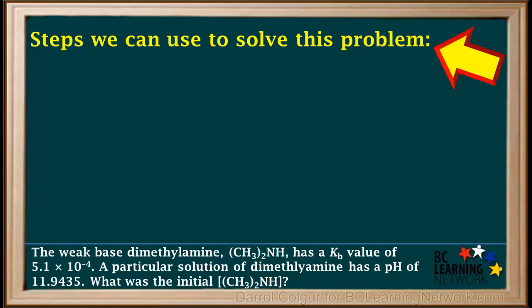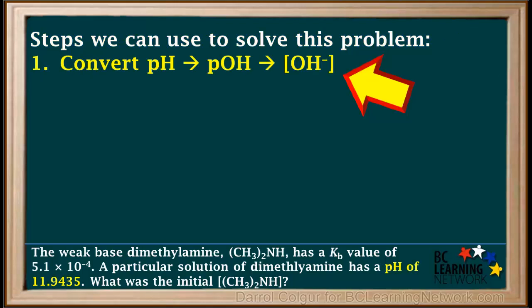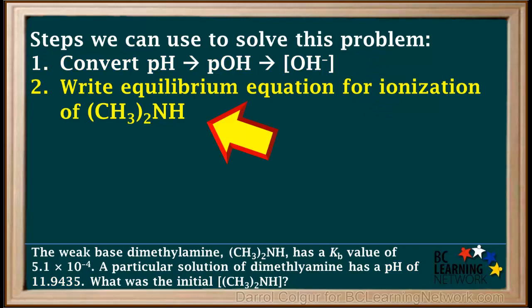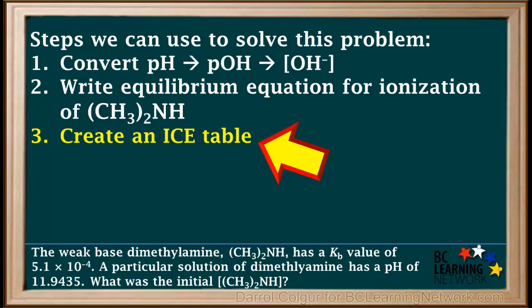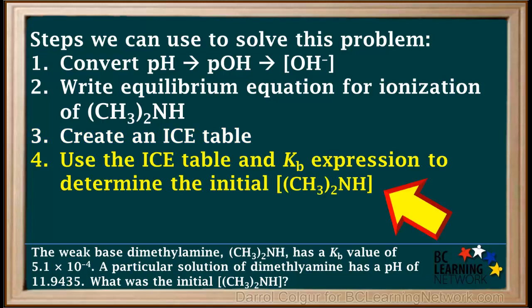Here are the general steps we can take to solve this problem. We will need the hydroxide ion concentration and we're given the pH, so we can start by converting the pH to pOH and then to hydroxide ion concentration. Like all problems involving weak acids or bases, we write out the equilibrium equation. Because dimethylamine is a neutral weak base, the reaction is called ionization rather than hydrolysis. Because we're doing calculations involving a weak base, we create an ICE table below the equilibrium equation. We can then use this ICE table, along with the Kb expression for dimethylamine, to determine the initial concentration of this base.